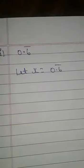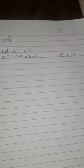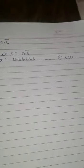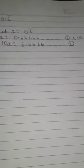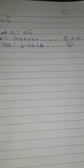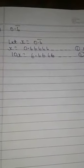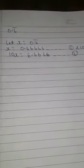So let x equals 0.6 bar. x equals 0.6666 is equation 1. And we will multiply it by 10. So 10x equals 6.666. It is our equation 2. So we will subtract equation 1 from equation 2.